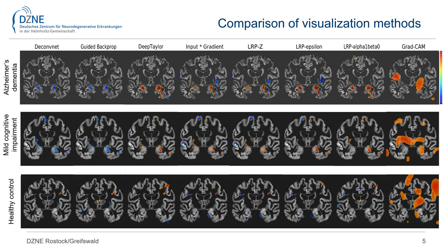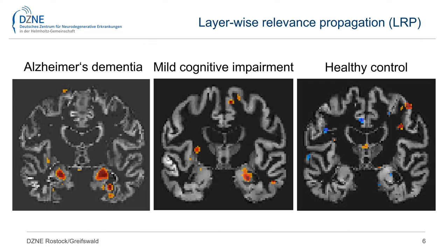Almost all of the methods showed high concordance in spatial information, except GradCAM, which provided only very approximate spatial information. Here we show a more detailed image for three people derived from layer-wise relevance propagation.